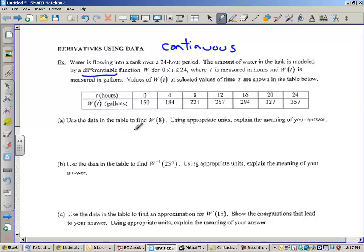Use the data in the table to find W(8). This means the Y value of 8. Using appropriate units explain the meaning of your answer. Well, this is rather easy. We come to the table. At 8, W(8) is 221. Now, using appropriate units, explain the meaning of your answer. So, what does this mean? What is the 221? Well, it's gallons. Gallons where? In the tank. When? When time T equals 8.